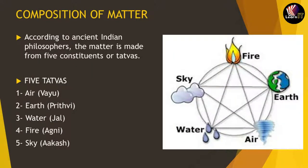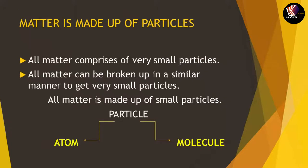Now let us move to the next segment: the composition of matter. In Indian philosophy, matter is made up of five different constituents, also known as tattvas in Hindi. The five tattvas are: first, air — known as Vayu; second, earth — known as Prithvi; third, water — known as Jal; fourth, fire — known as Agni; and fifth, sky — known as Akash. All these form matter.